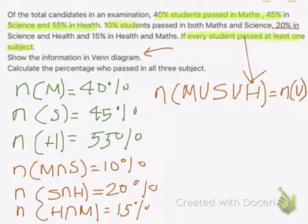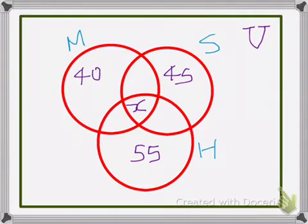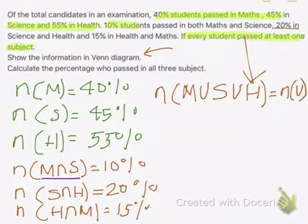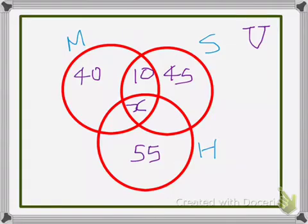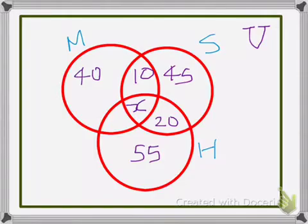We've been told that the percentage of students who passed in math and science is 10%. So math and science — here is math, here is science — this intersection becomes 10%. Science and health is 20%, and math and health is 15%. This is our Venn diagram.